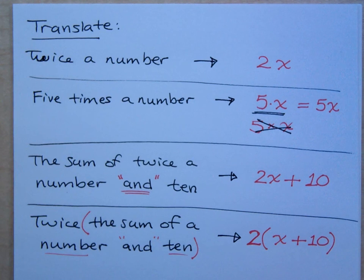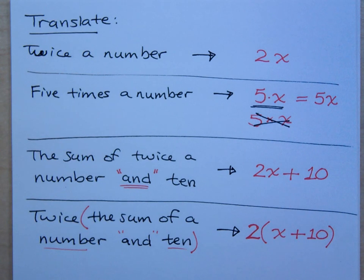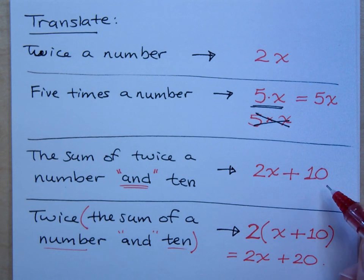Now, some of you may be thinking, well, isn't that the same thing that I just had up here? Why not? If I multiply this out, if I distribute, I would have 2x plus what? 2x plus 20. Definitely not the same as 2x plus ten.